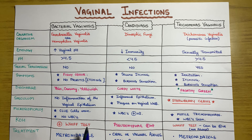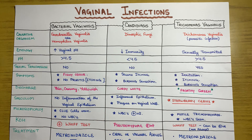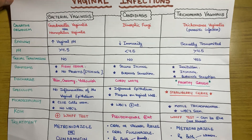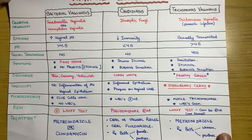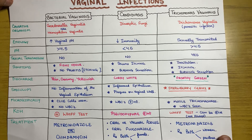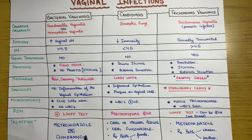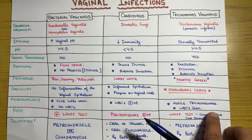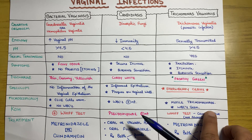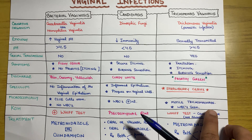A positive whiff test with potassium hydroxide (KOH) is also characteristic of bacterial vaginosis. Treatment involves simple antibiotics — metronidazole or clindamycin are used for bacterial vaginosis infection.